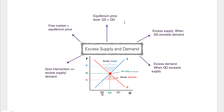So what is it? Well, market equilibrium is a situation that occurs in a market when the price is such that the quantity that consumers wish to buy is exactly balanced by the quantity that firms wish to supply. Or in short, QS — quantity supplied — is equal to QD, which is quantity demanded.